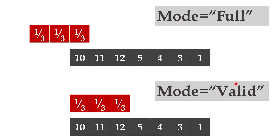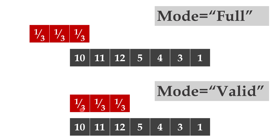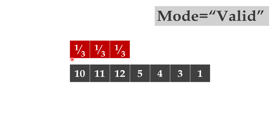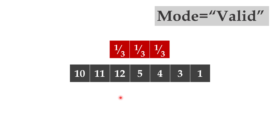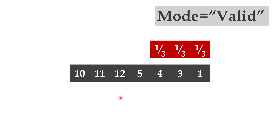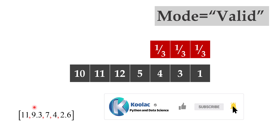There is another mode called valid. In the valid mode, certain cases are not allowed — for example, when we don't have enough values to multiply. In the full mode there is no problem, but in valid mode a case is not allowed if you don't have two values to multiply. The valid mode starts from the case where you can multiply all values together, and then you slide to the right until the last valid case. If you do the calculations, you get those values for sliding the red vector to the right.